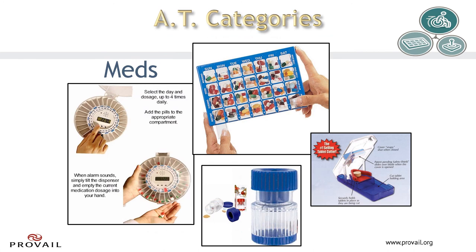Here we see some options for managing medications. There is everything from a simple managing set at the top that has the days of the week and the times broken out so that medications can be pre-sorted ahead of time, to a more complex system on the left with timers that can be set — then the dosages are automatically released or an alarm will go off informing the person that it is time to take their pills. These items on the bottom right allow you to split pills easier when it is necessary to adjust for the right dosage of medications.